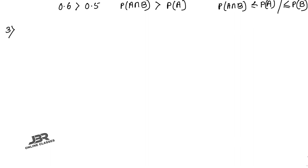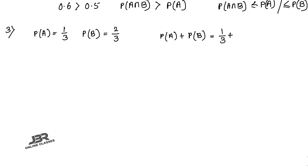Number three: state true or false with reason. First: P(A) = 1/3, P(B) = 2/3, then A and B are mutually exclusive and exhaustive. P(A) plus P(B) equals 1/3 plus 2/3 equals one. But we cannot determine the value of P(A∩B) or P(A∪B) from this alone, so we cannot say A and B are mutually exclusive or exhaustive. Answer: False.